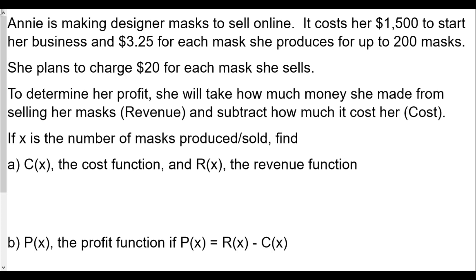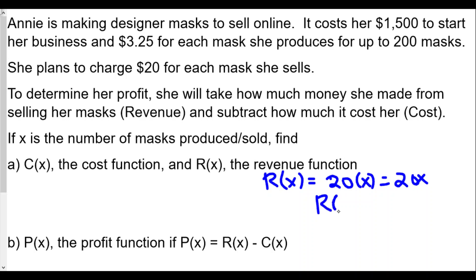One function is a lot easier to define than the other, and that's the revenue function. Revenue is how much she is going to collect for every mask. For example, if she sold one mask she would make $20; if she sold two masks she would collect 2 times 20 = $40; she sells ten masks, she would collect 20 times 10 = $200. So our revenue function R(x) is going to be $20 times the number of masks sold, x. So R(x) = 20x. The revenue function is just how much you're charging times how many you sell, and we use x for that number.